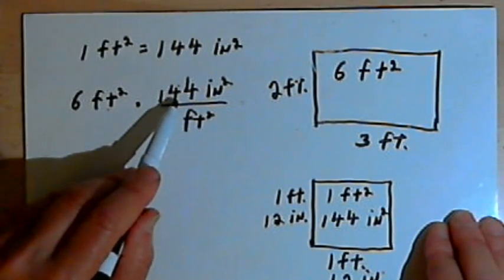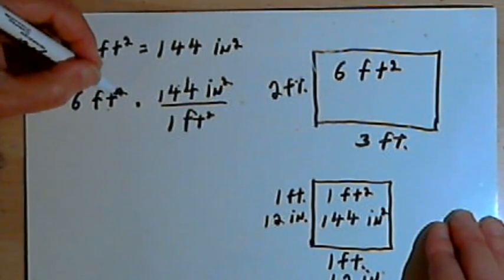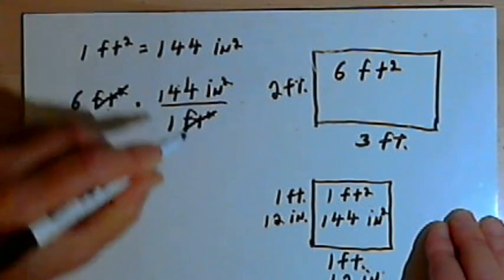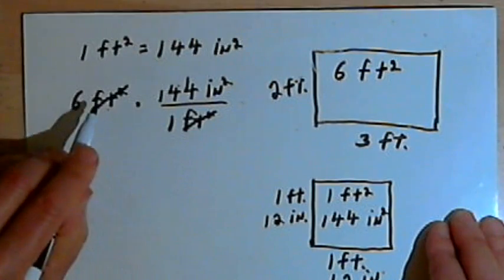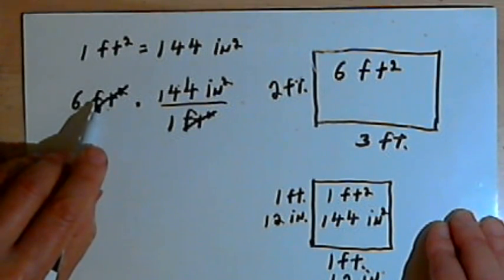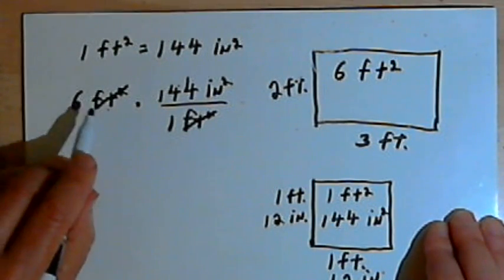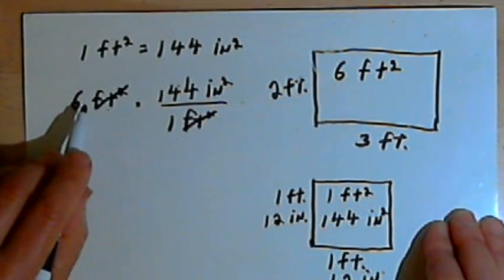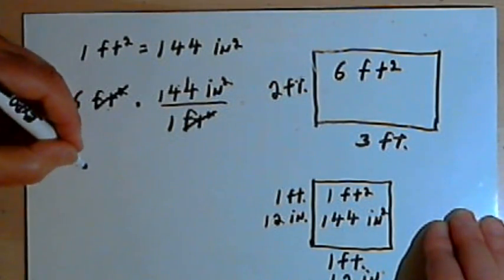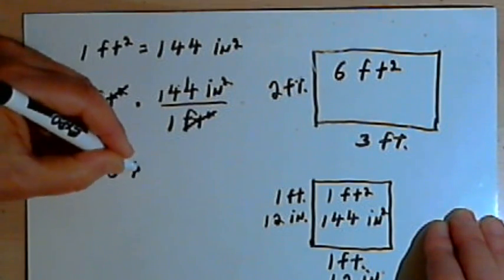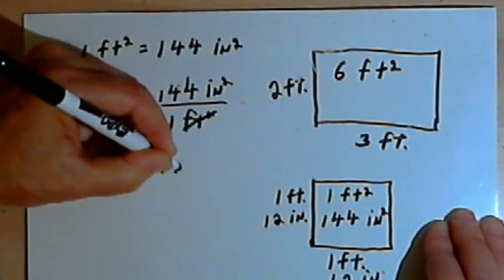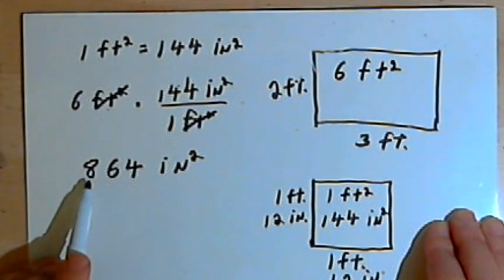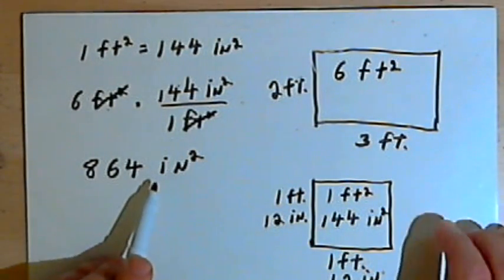Because of the way I wrote the fraction, I can now cancel out the square feet from the denominator and from the 6 square feet I have. Then all I have is 6 times 144 square inches. 6 times 144 is 864, so my rectangle has an area of 864 square inches.